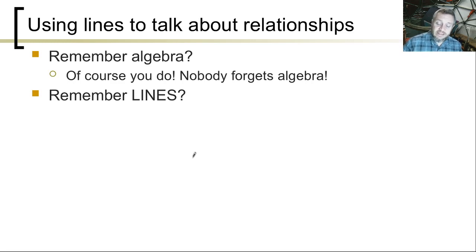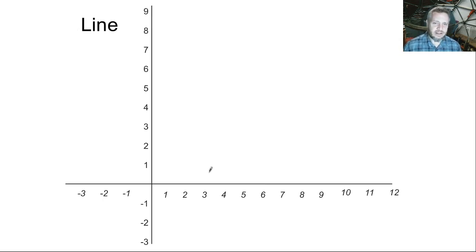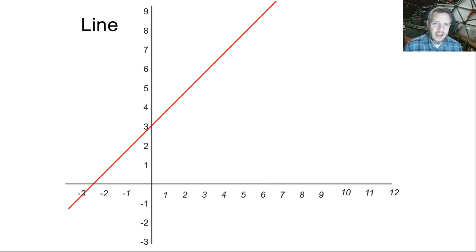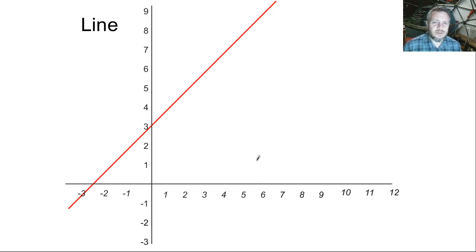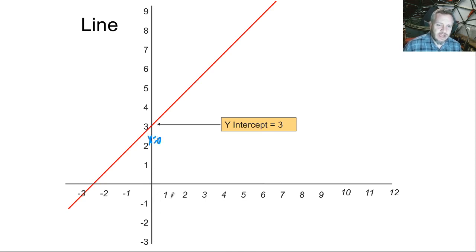So let's do a quick review of lines with algebra. Here's your Cartesian coordinate system, and there's a line. There's actually a lot of different ways to describe a line — the point-slope formula, naming two points, and other ways. But we use the point and slope. So that's one point: y-intercept equals 3, meaning x equals 0 and y equals 3. That's the y-intercept — that's one point. And then the slope — we could take any two points, take the change in x and the change in y.